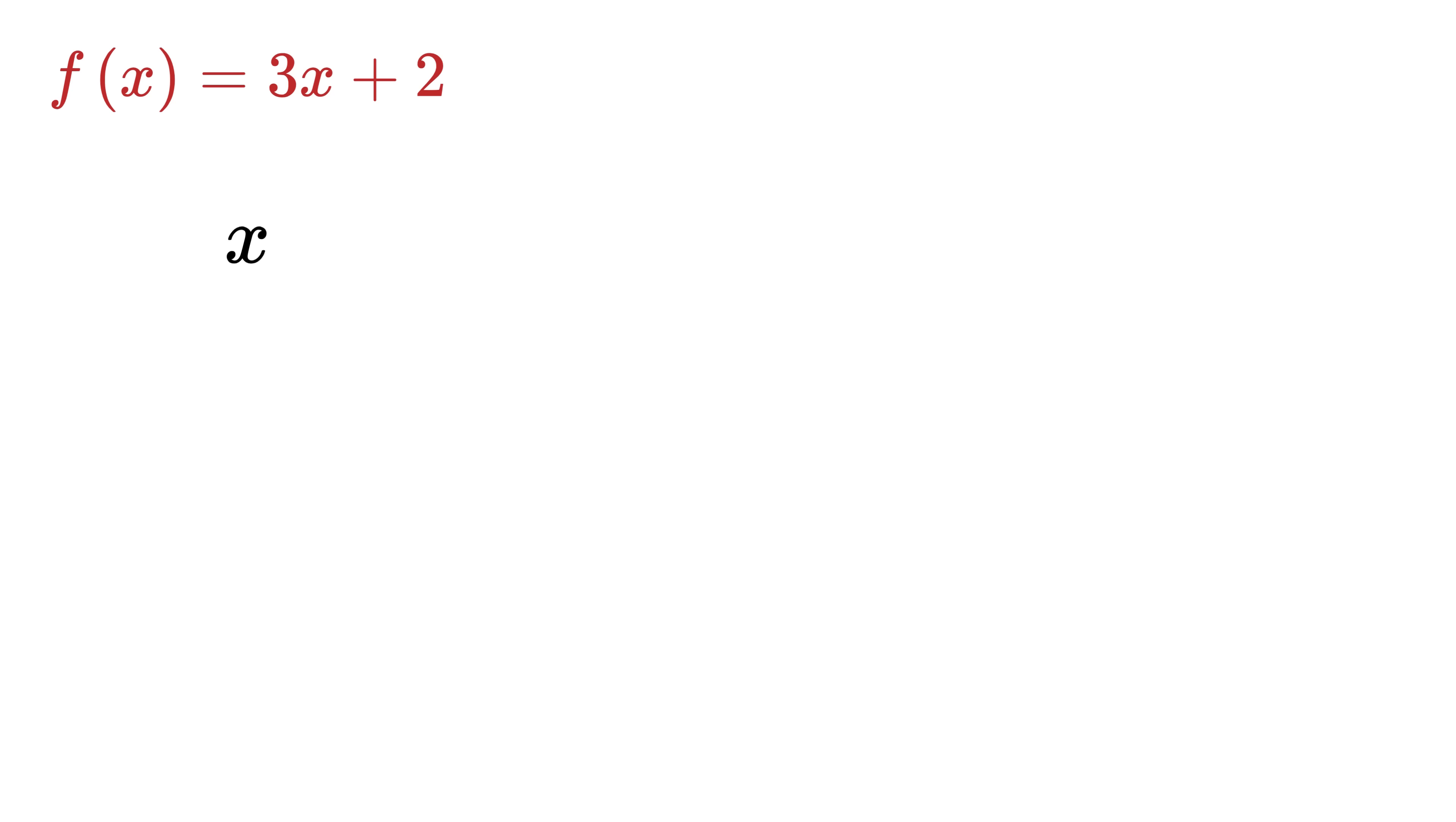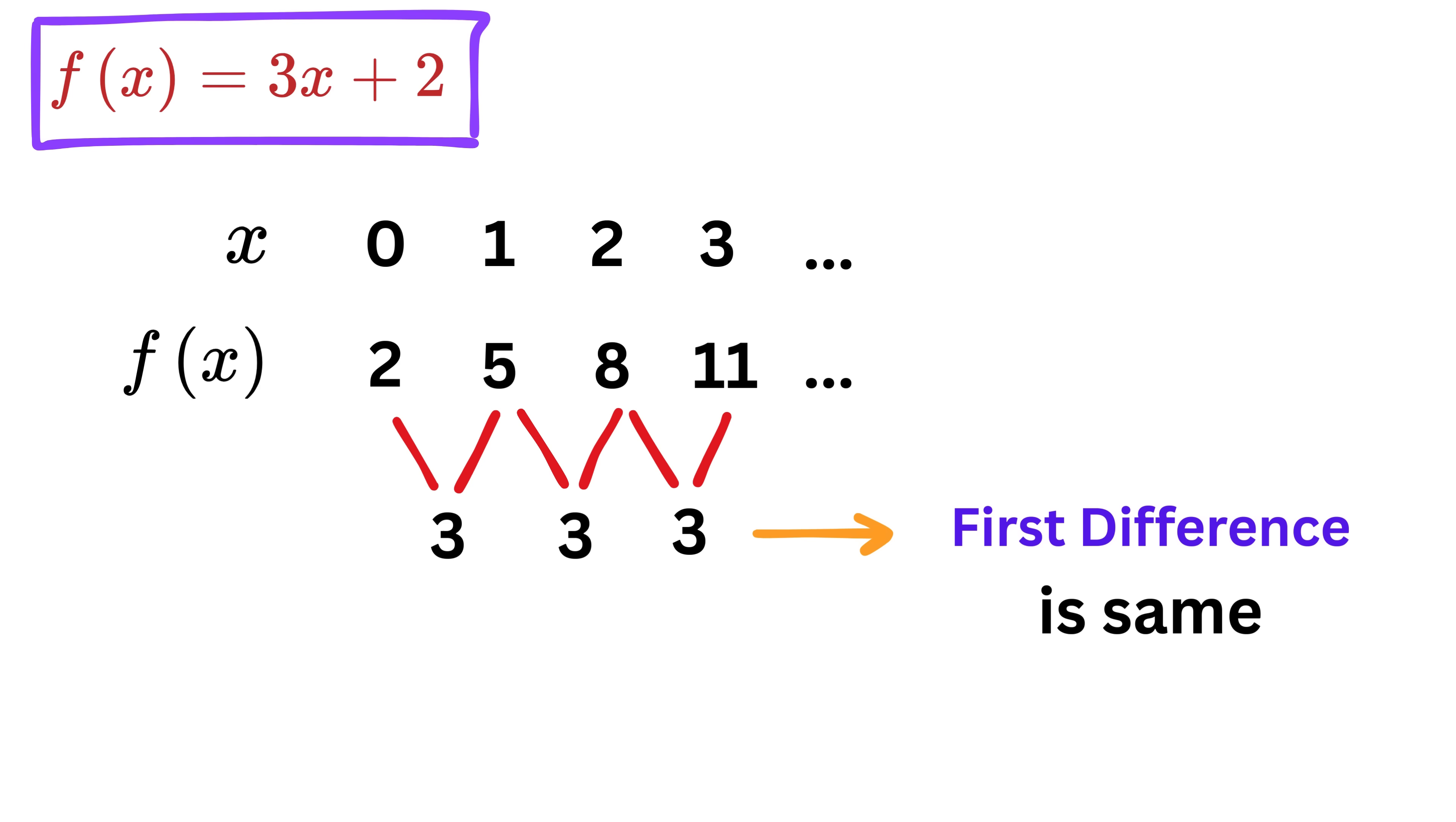If you plug in successive values of x like 0, 1, 2, 3, and so on, you will notice that the output will be 2, 5, 8, 11, and so on. Now take the difference between these two which gives 3, then these two gives 3, then these two gives 3. This means the first differences, which are just the changes between consecutive outputs, are constant. And this is the sign of a linear function. You can say a function is linear if the difference in its output remains the same or constant every time the input increases by one.